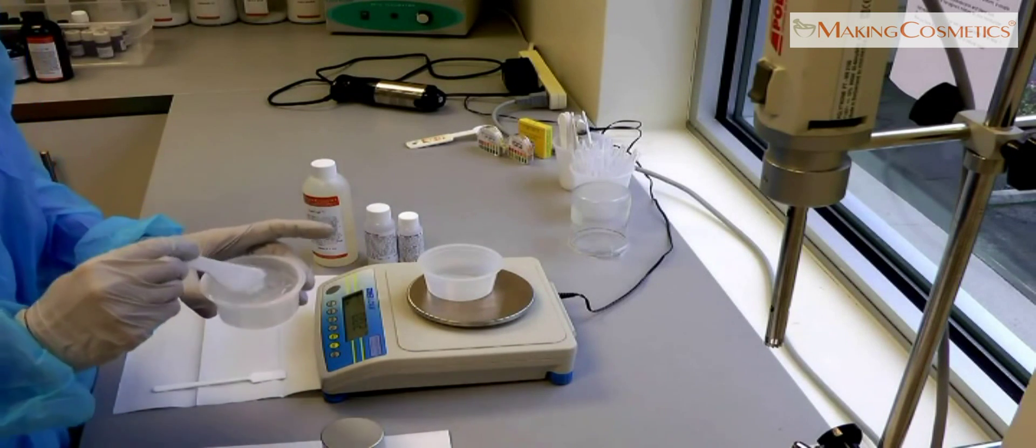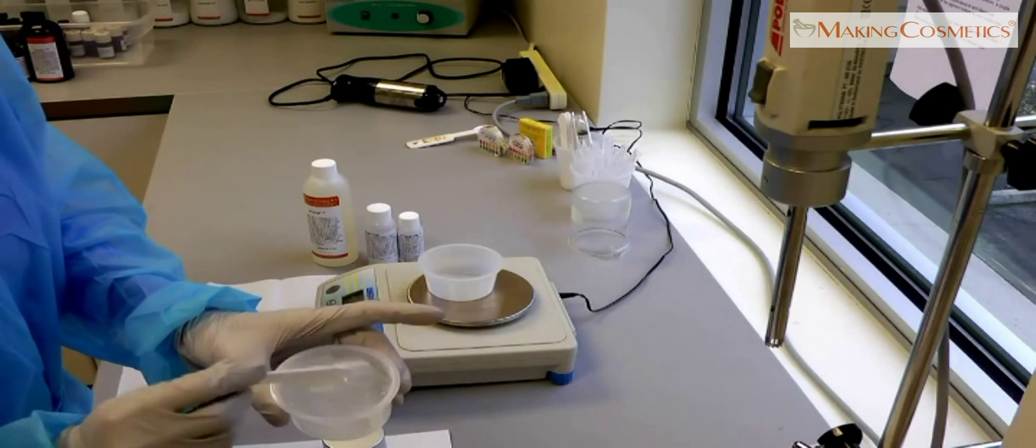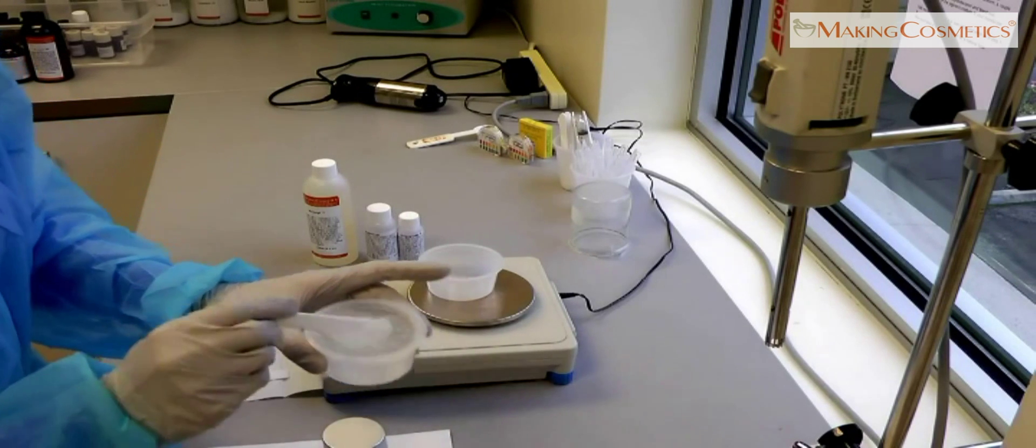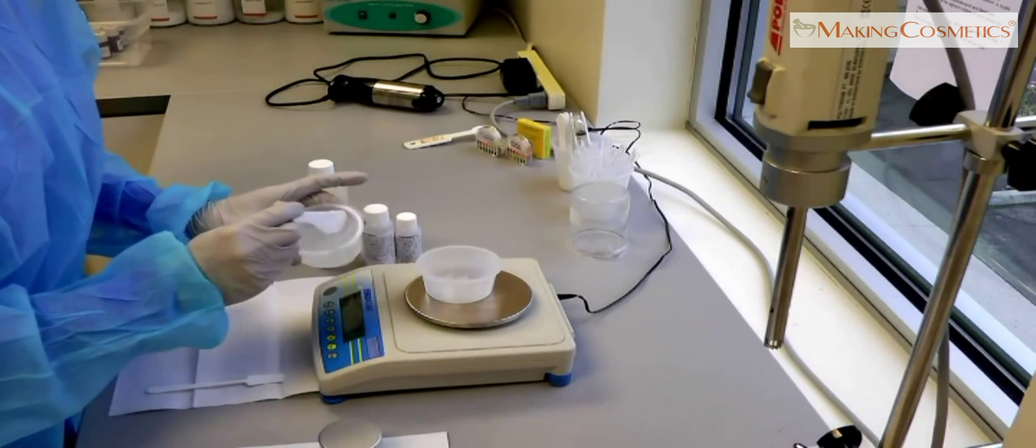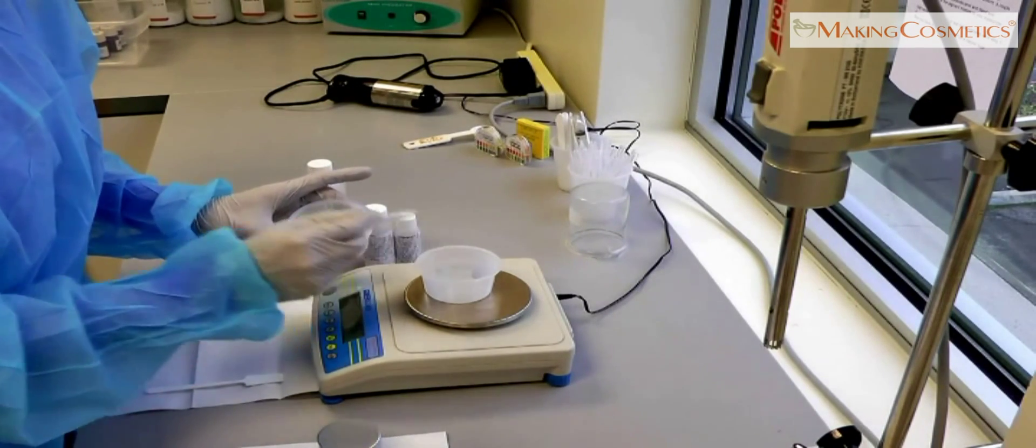Now we're going to turn our carbomer gel from earlier into an eye gel that has anti-aging properties. We're going to add some to our little container here.